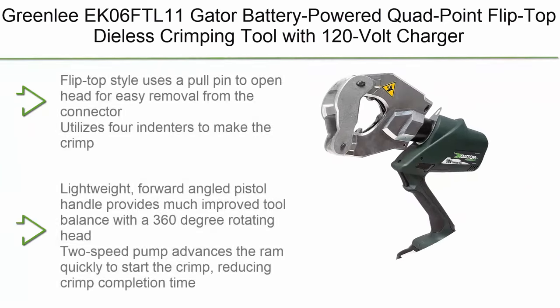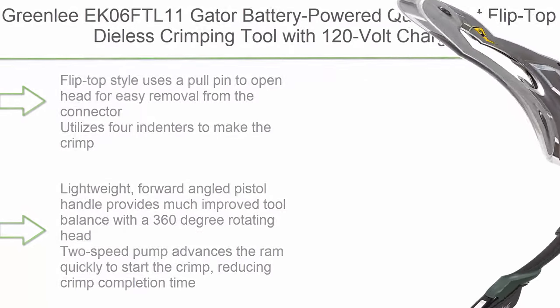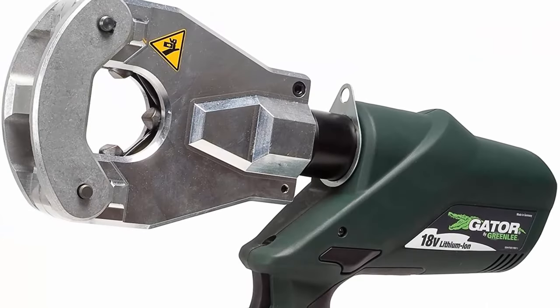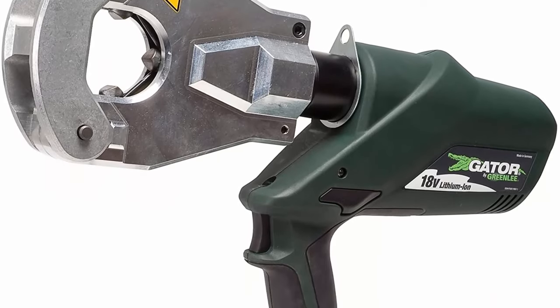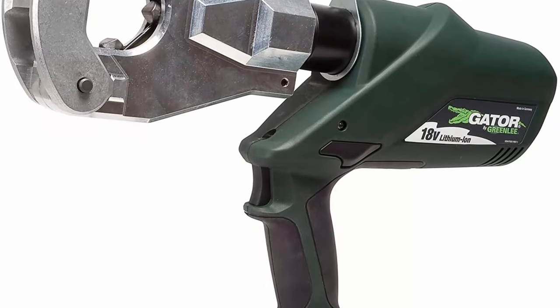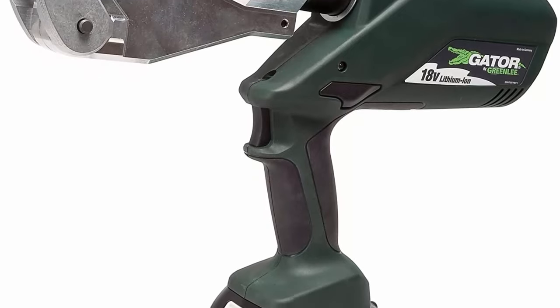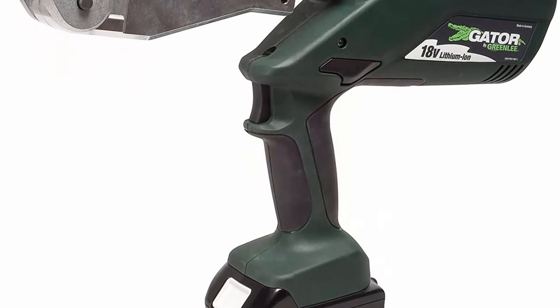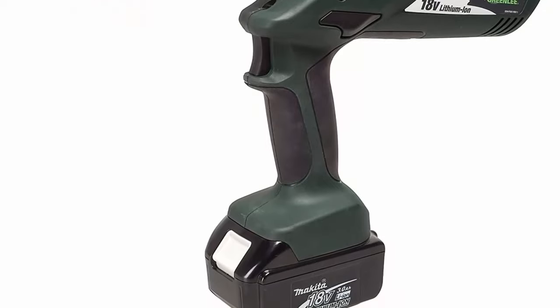Top 4: Greenlee K06FTL11 Gator Battery-Powered Quad Point Flip-Top Dialess Crimping Tool with 120-Volt Charger. Flip-top style uses a pull pin to open head for easy removal from the connector. Utilizes four indenters to make the crimp. Lightweight forward-angled pistol handle provides much improved tool balance with a 360-degree rotating head. Two-speed pump advances the ram quickly to start the crimp, reducing crimp completion time. Includes two Li-ion batteries, 120V charger, and carrying case.